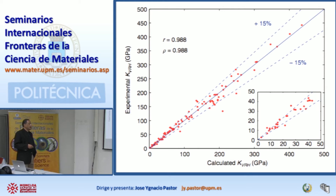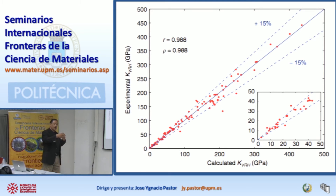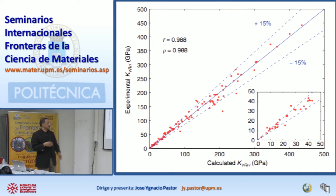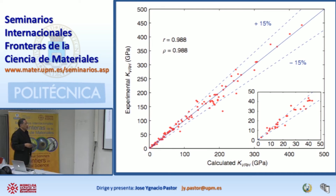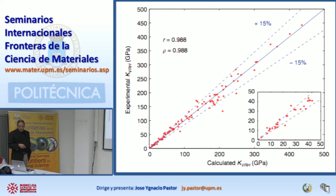The big development is that theory guys were always behind the experimentalists — now the theory guys are ahead. And that's good because we cannot afford the Edisonian approach anymore. We now have to rely on computers to do lots of experiments.